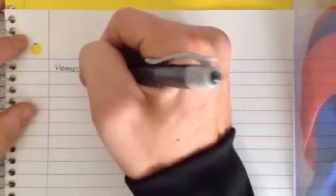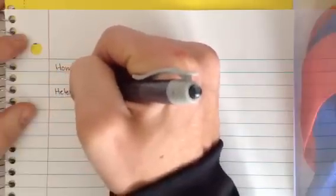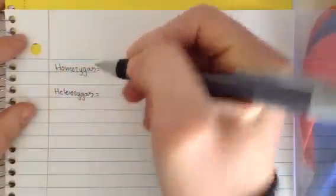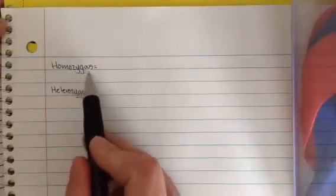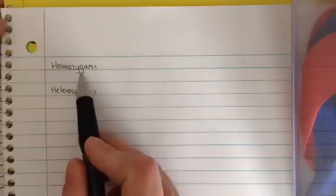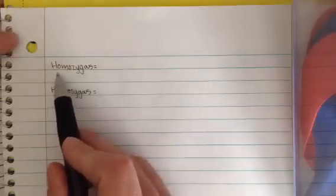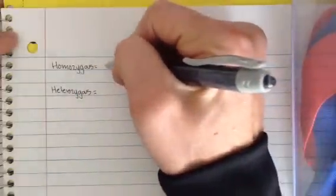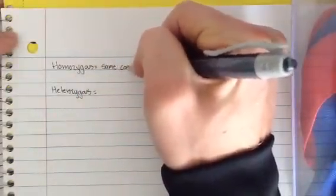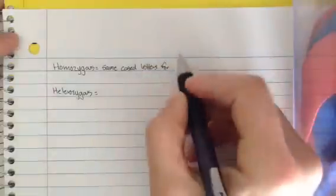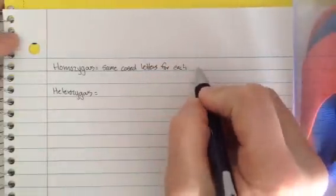The first words I'd like you to write down are homozygous versus heterozygous. Now we've had the prefixes homo and hetero before. Homo means the same. Hetero means different. We also just had zygote before, which we know is the first cell of a new individual. So if something is homozygous, it means that they have the same cased letters for each. And kind of a new word here is allele.